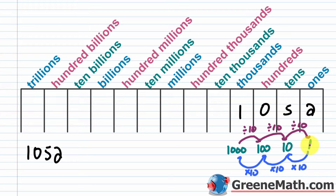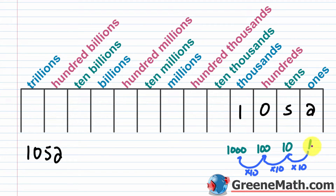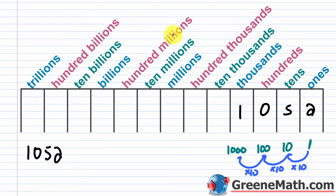So as we move to the left, we multiply by 10; as we go to the right, we divide by 10. We can use that to come up with the place names. The rightmost position is ones. Move left: tens, hundreds, thousands, ten thousands, hundred thousands, millions, ten millions, hundred millions, billions, ten billions, hundred billions, trillions, ten trillions, hundred trillions, and so on. You can't list everything, so you just stop wherever you want.